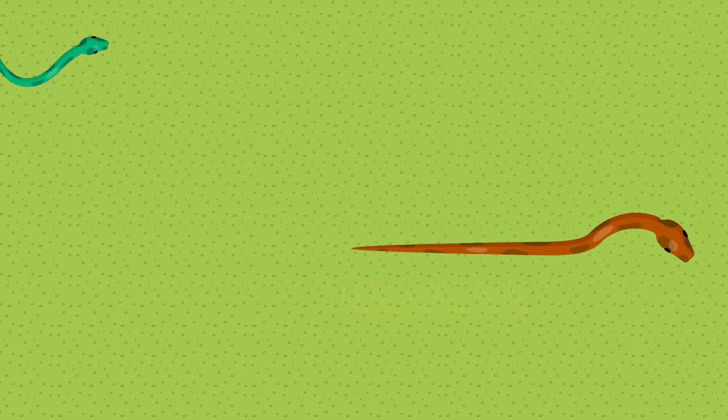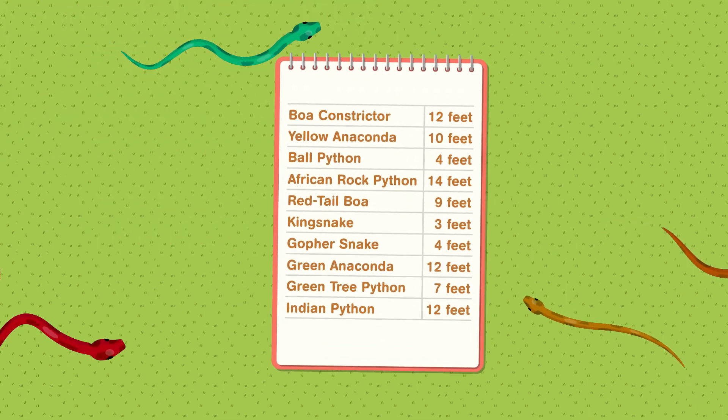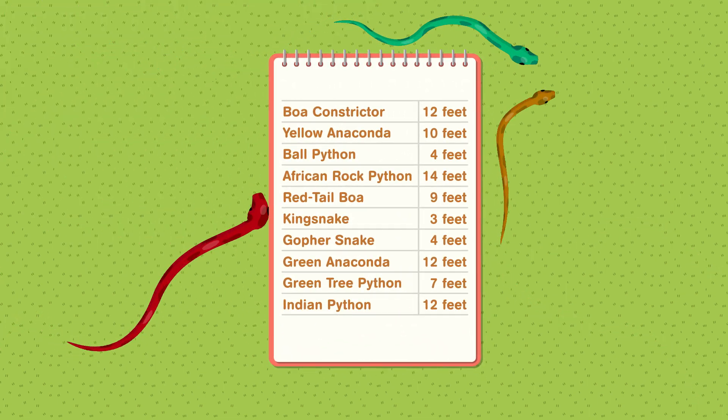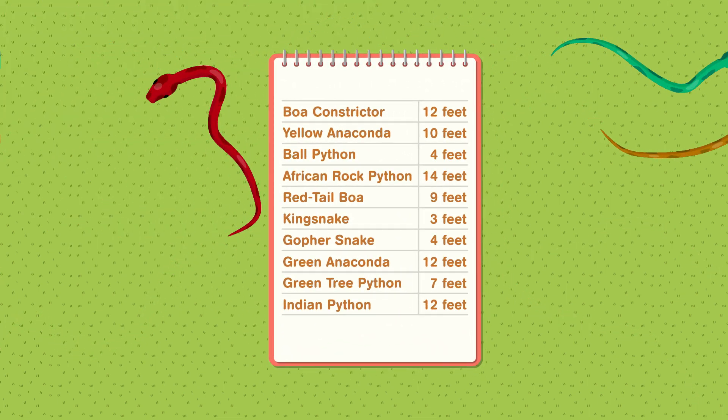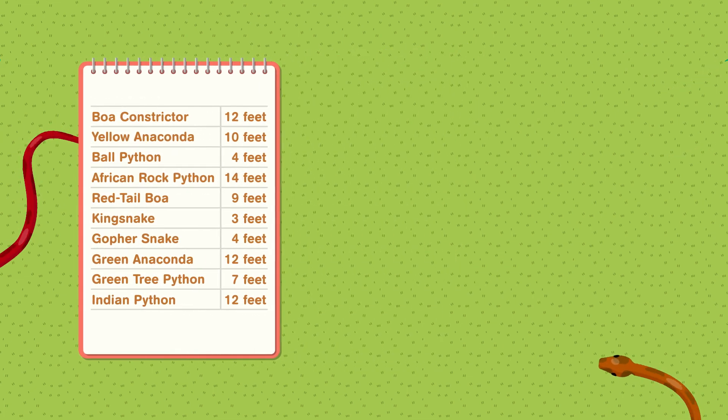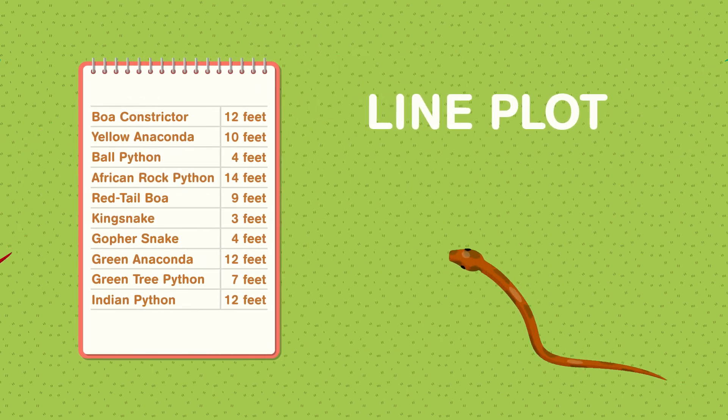Joaquin measures ten of the snakes and records their measurements to the nearest foot. He wants to display this data in a line plot to show how many snakes of each size live at the zoo.